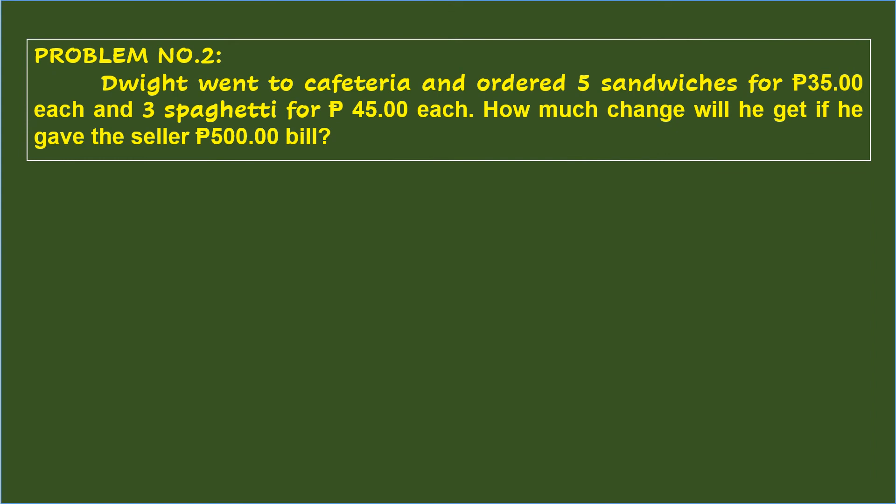Problem number 2. Dwight went to the cafeteria and ordered 5 sandwiches for 35 pesos each and 3 spaghetti for 45 pesos each. How much change will he get if he gave the seller a 500 peso bill?